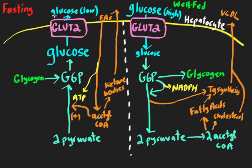In the well-fed state, we're in an energy storage mode and the liver plays a major role. In contrast, in the fasting state the liver is producing lots of glucose — 2-pyruvate goes all the way to glucose, glucose exits the liver, and we're breaking down glycogen and fatty acids. This picture puts things in perspective about how these metabolic reactions are interrelated.